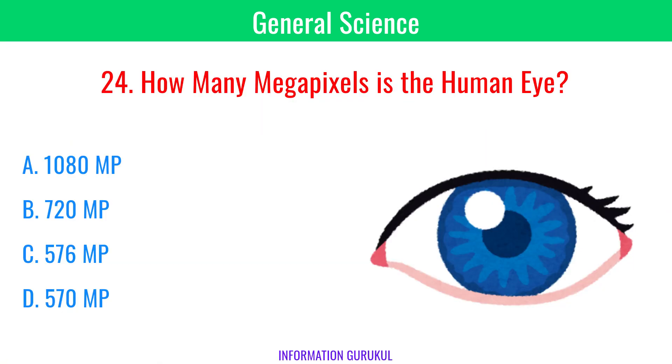How many megapixels is the human eye? 576 megapixels.